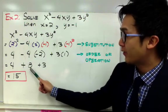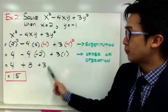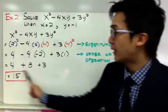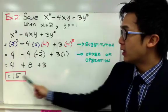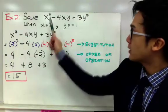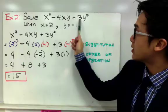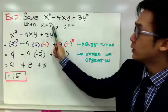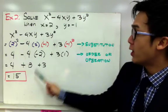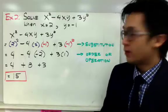And 3 times 1 is simply 3, and by simplifying my last step, 4 plus 8 plus 3 will give me 15. So x squared minus 4xy plus 3y squared, when x is equal to 2 and y is equal to negative 1, is simply equal to 15.